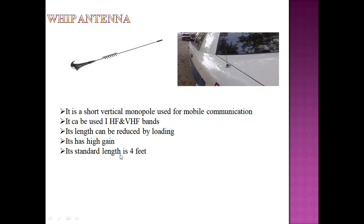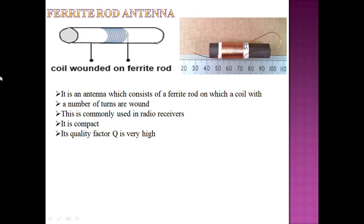The whip antenna, also called a monopole or core antenna, is used for mobile communication. It can be used in HF and VHF bands. The length can be reduced by loading, and the length is typically around four feet. It has high gain.